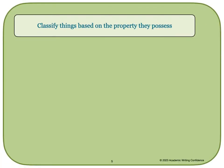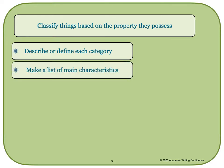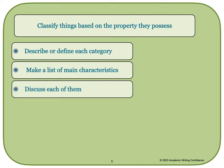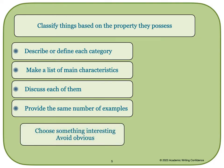Here are a few things you should do when writing a classification essay. You should classify things based on the property they possess — what are the specific characteristics about the topic that you want to use to write your essay? You should describe or define each category, and making a list of main characteristics is also important. You should discuss each of the categories and, if possible, provide the same number of examples for each. When deciding what to write about, choose something interesting and avoid writing about things that are obvious.